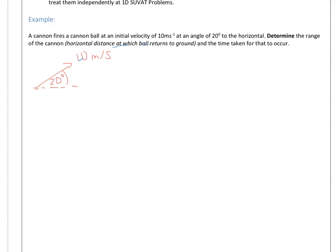So essentially the horizontal distance at which the ball will return to the ground. So if we think about its motion, what it's going to do is essentially, weeeeee, and at some point it's going to come back to the ground. And then what we're going to do is work out the time taken for that to occur. So actually we're going to do that the other way around. The first thing we're going to do is work out the time, and then we will solve to find the distance.